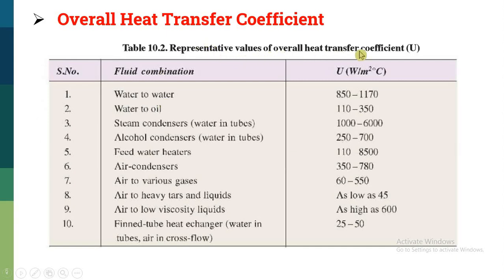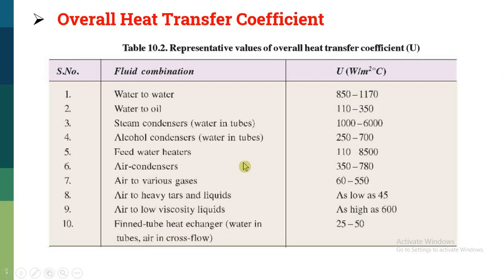This table represents the values of overall heat transfer coefficient. While designing a heat exchanger we consider this overall heat transfer coefficient, and various fluid combinations are mentioned in the table. If both fluids are water, the coefficient varies in a given range. If you are using water and oil, a different range is given. For air and gases, another value applies. So for different fluid combinations such as water-water, oil-water, or air-water, the values of overall heat transfer coefficient must vary in their respective ranges.